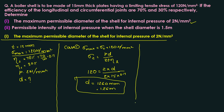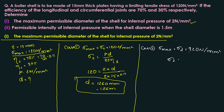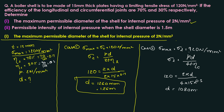Case 2: σ_max is taken as longitudinal stress. Using σ_l = pd / (4t × η_c): 120 = (2 × d) / (4 × 15 × 0.3). Solving, diameter = 1080 mm, that is 1.08 m. So we have two diameters: 1260 mm and 1080 mm.